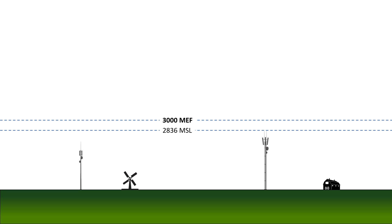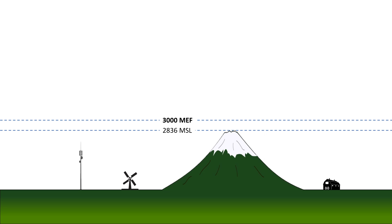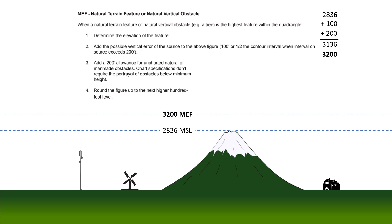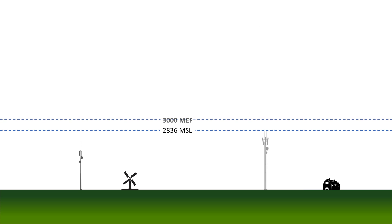Here's what happens if that highest obstacle isn't a radio tower but a natural feature like a mountaintop. Again, we start with the terrain elevation, then add a 100-foot vertical error allowance. Now, though, we also add a 200-foot allowance for uncharted objects which might not have made it onto the chart. Our sum is 3,126, and we'd round to the next highest 100 to get our MEF of 3,200 — which is what it would be if that highest feature were terrain and not the radio tower.